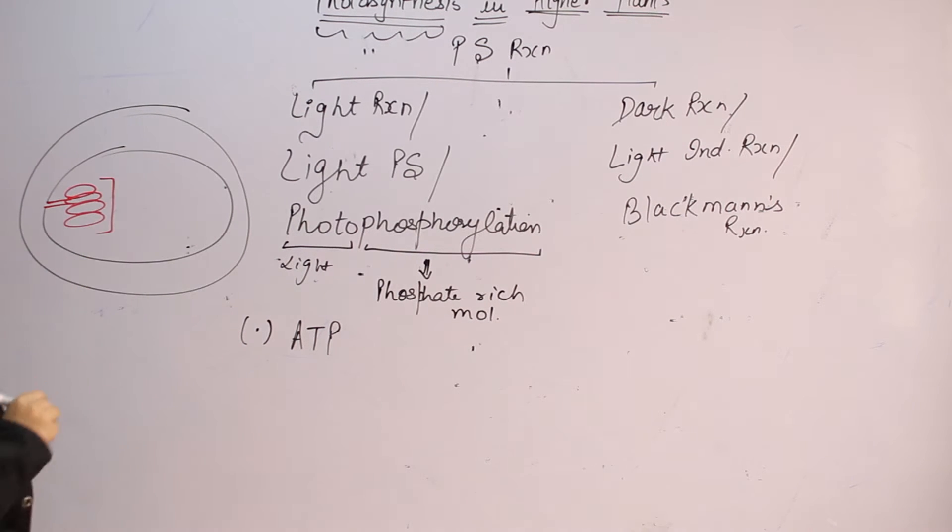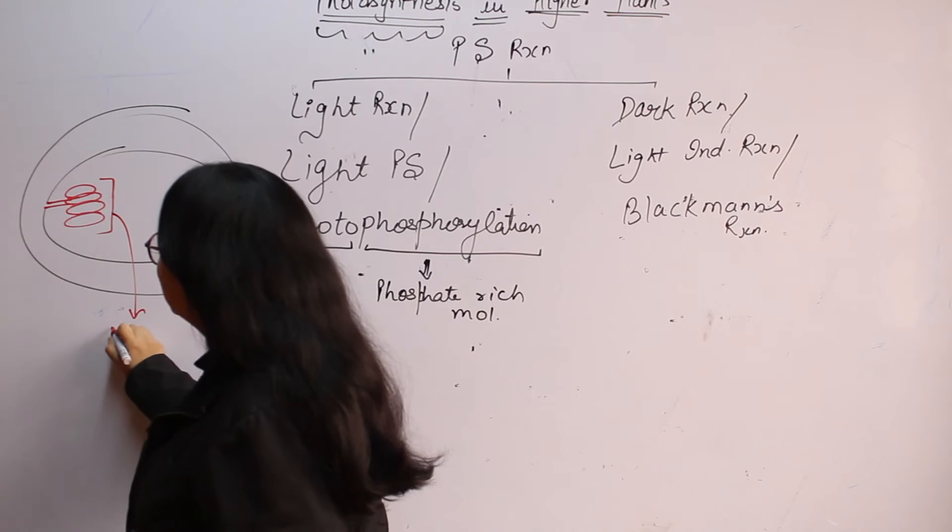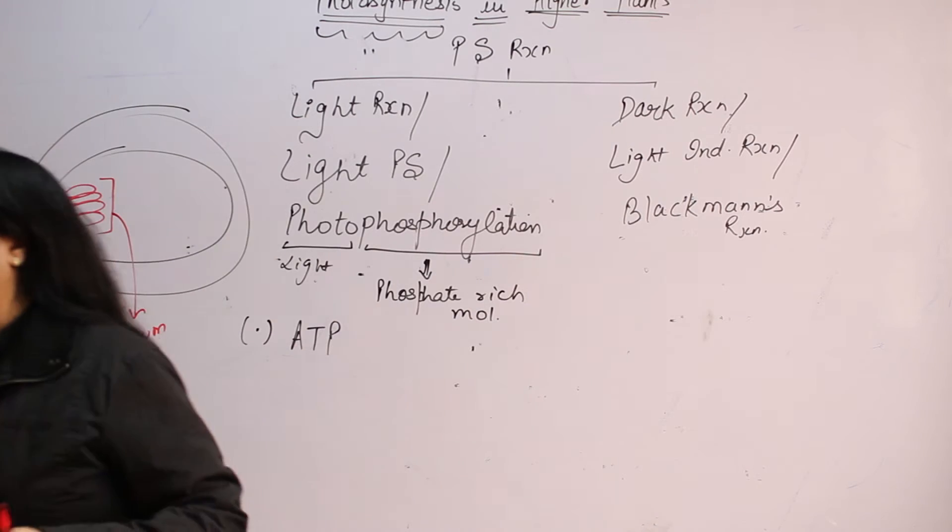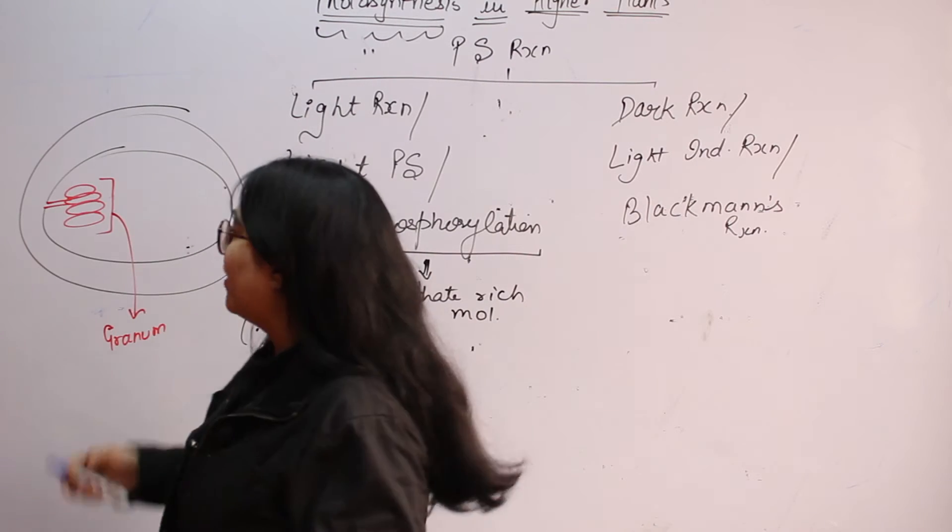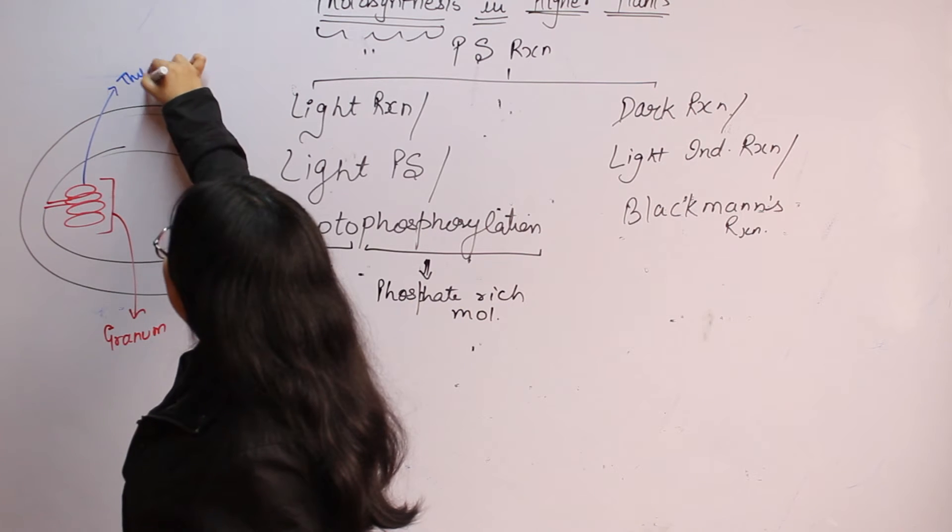So chloroplast is a double membranous structure in which inner membrane gets inwardly folded to create a stack of such structure. This complete stack is called as granum. Each single unit of this stack or each unit of this granum is called as thylakoid.